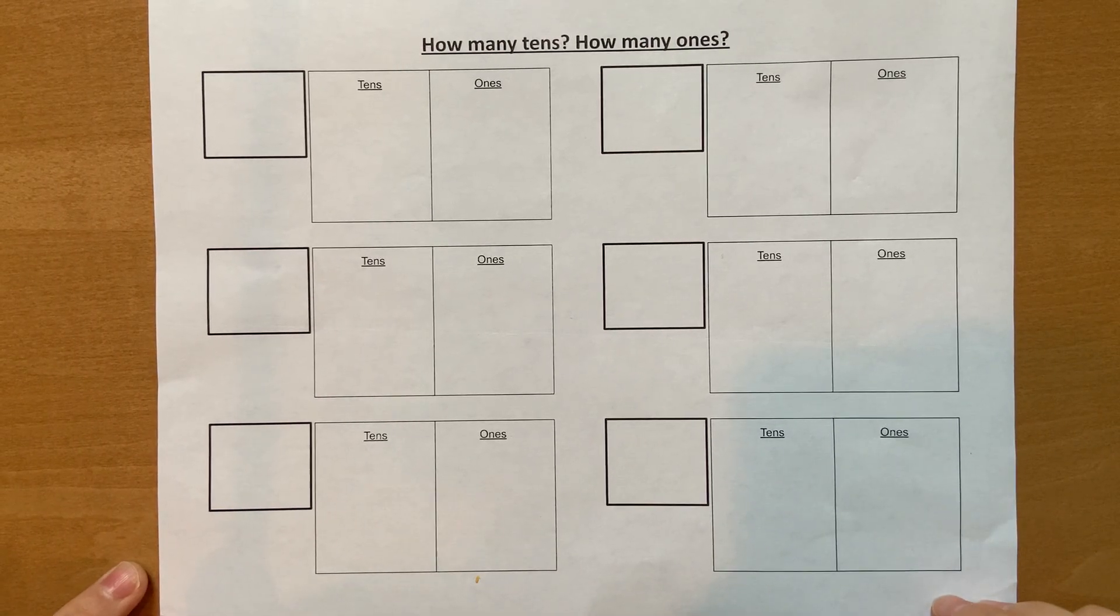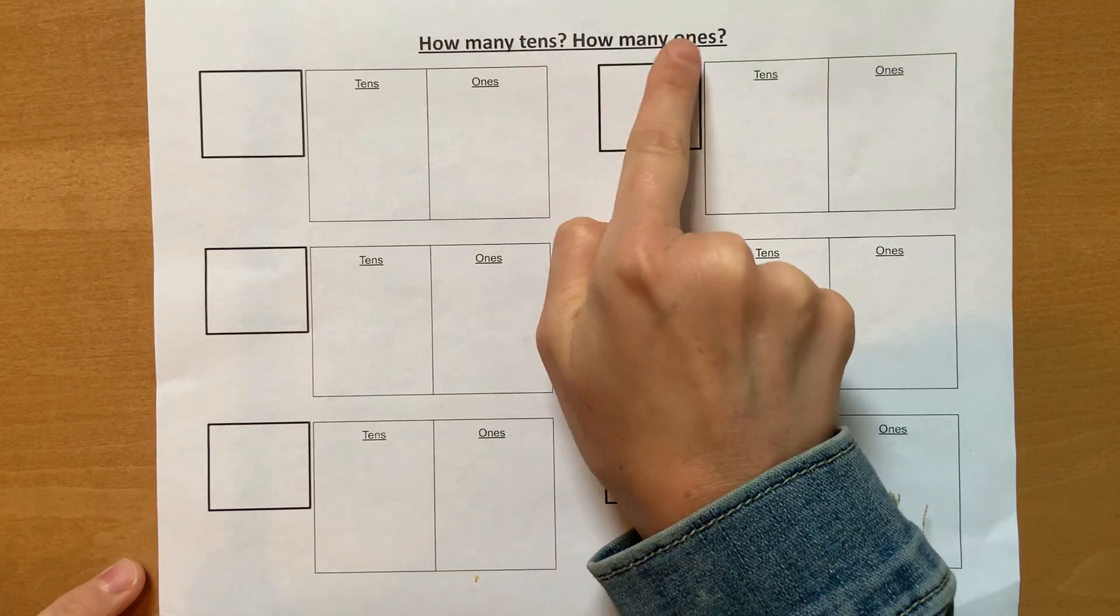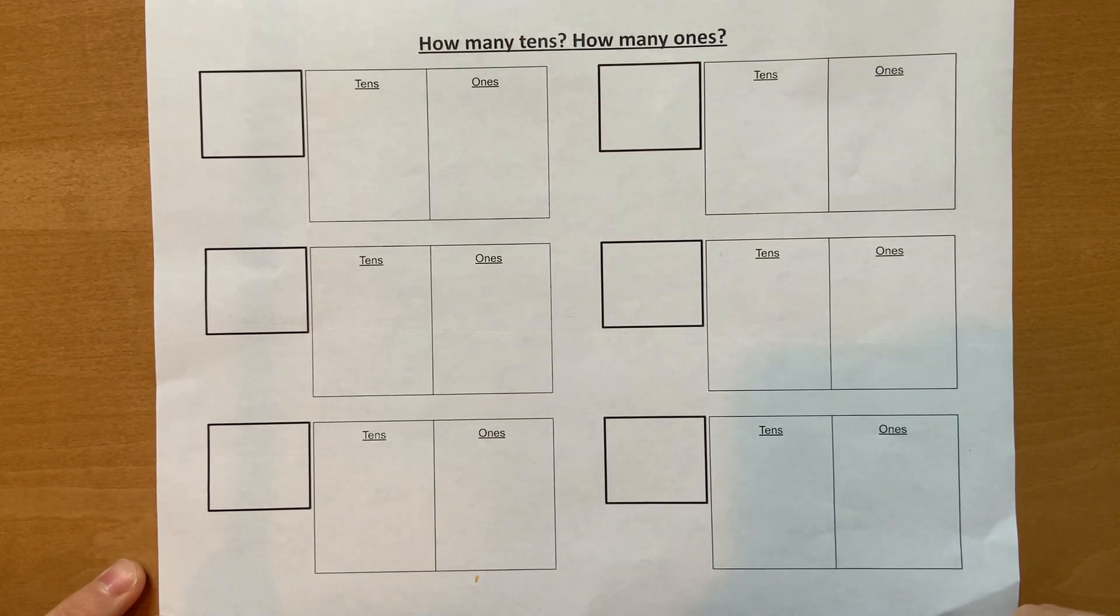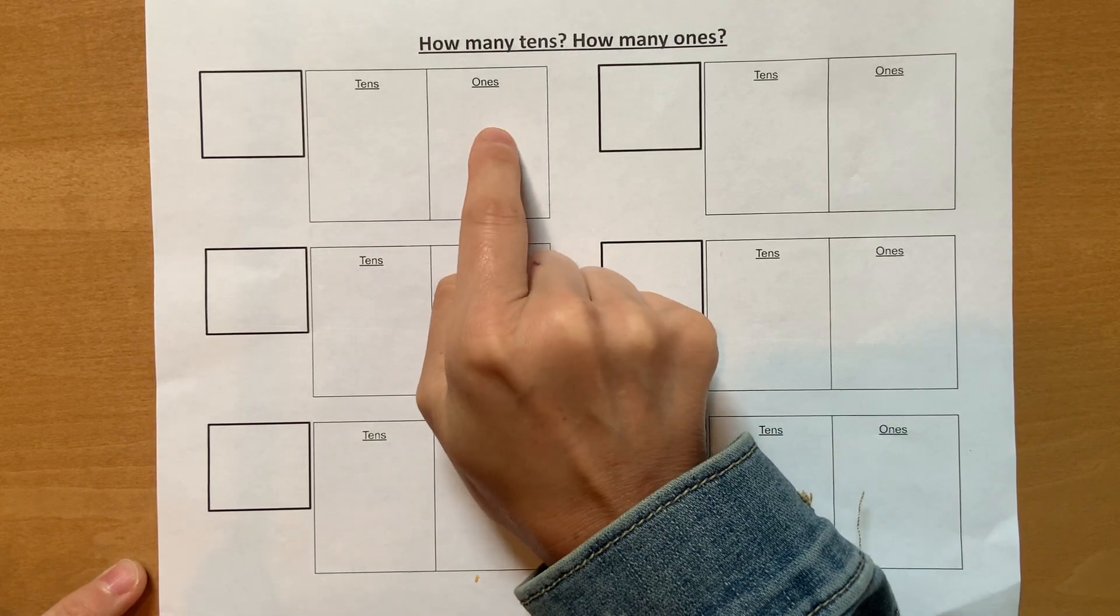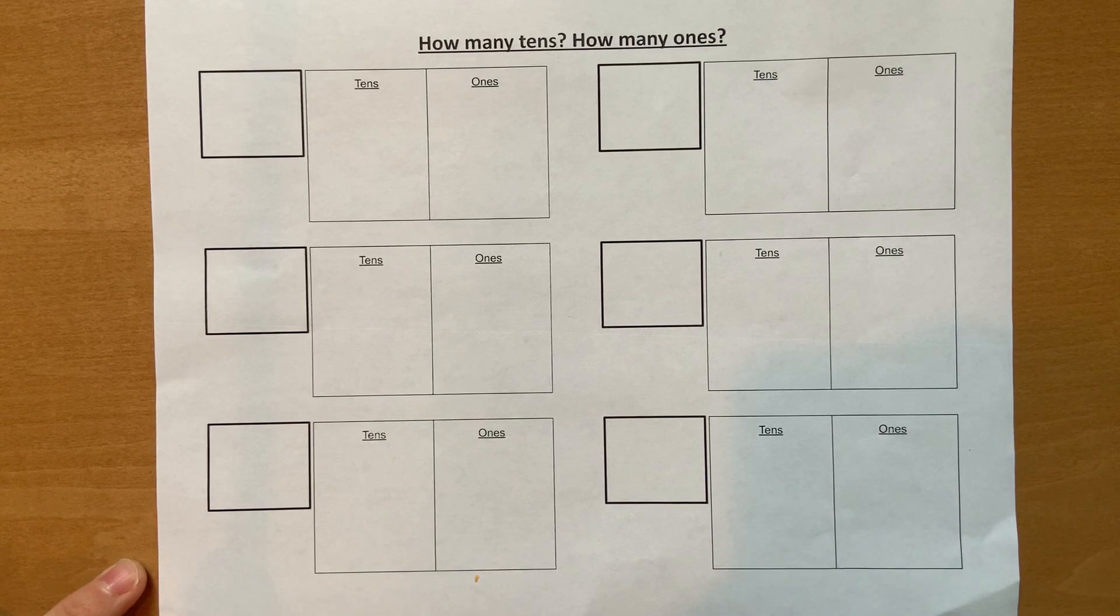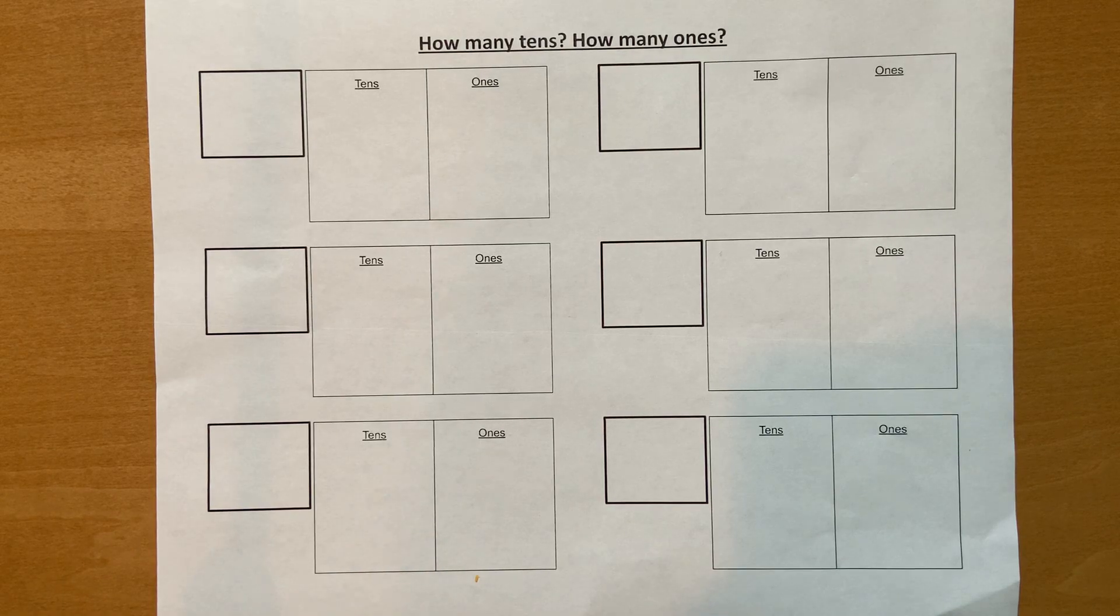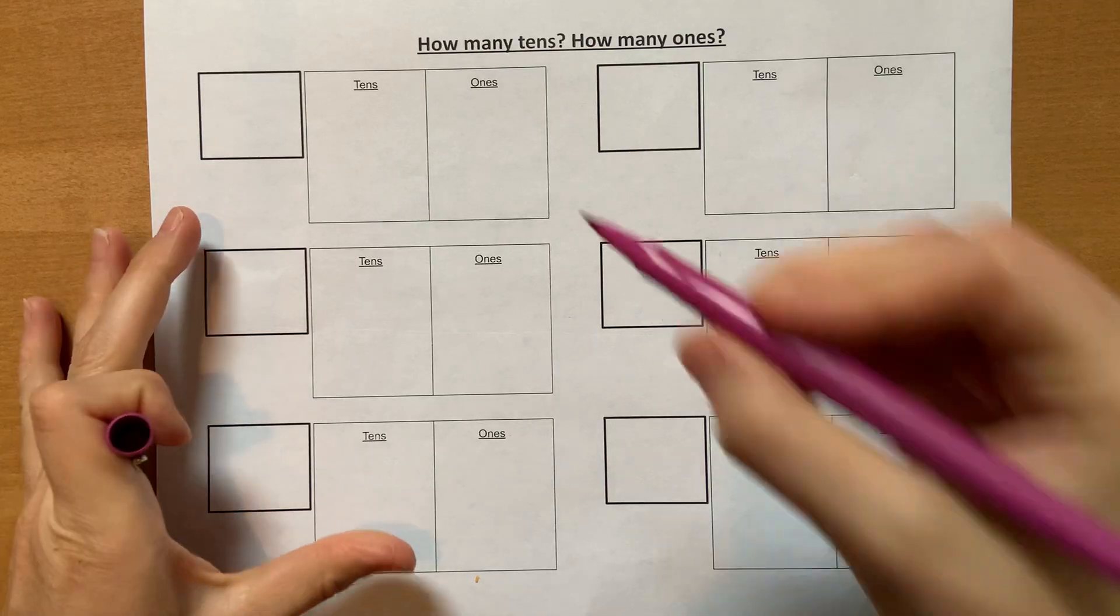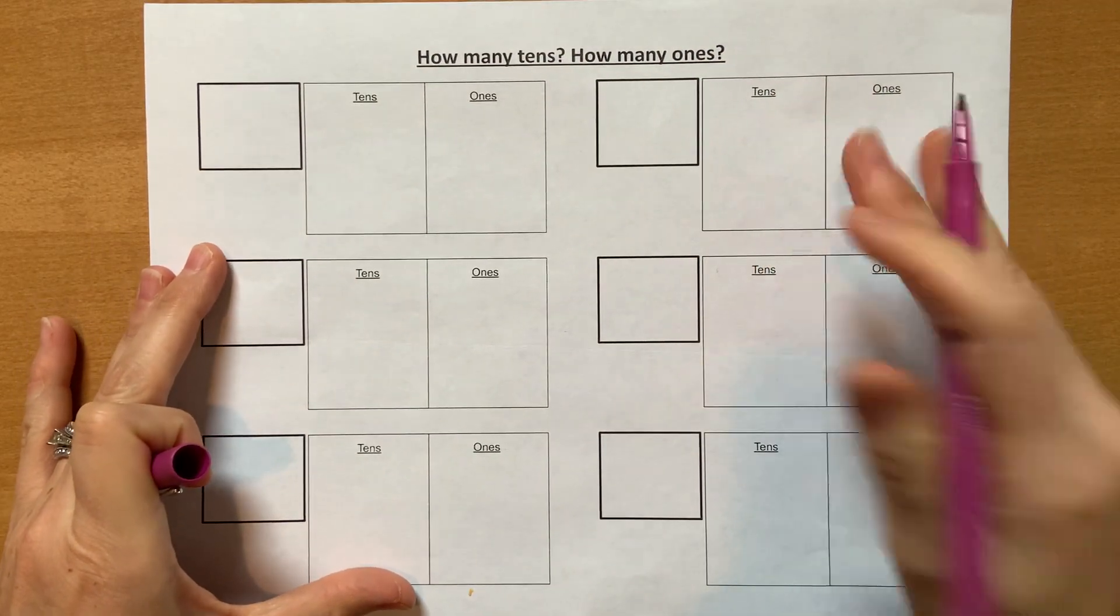All right, today we're going to be practicing how many tens and how many ones. Our goal is to be able to write the numbers with tens and ones, but also show you the quantity, show you how many each number represents. So we're going to get started right away, but I'm going to show you what tens and ones actually look like, how you can draw tens and how you can draw ones. That's what we're going to do first.